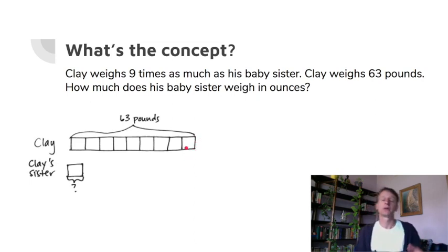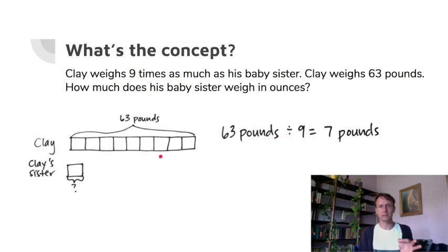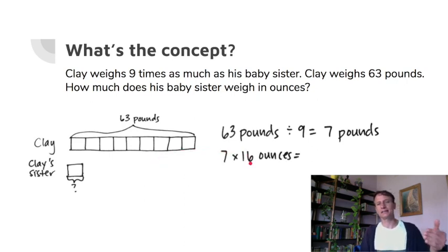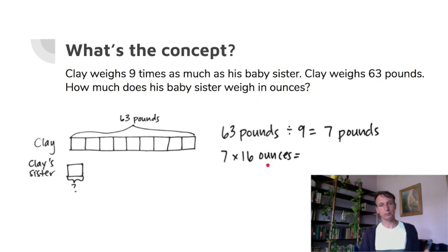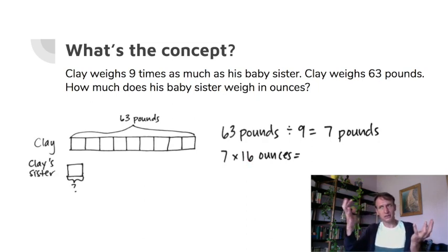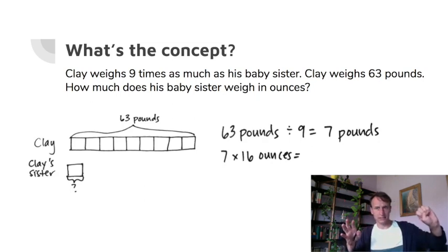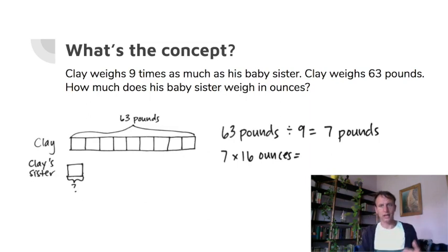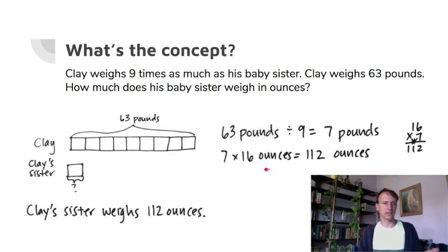Clay is nine times as much, so 63 divided by nine is seven. Baby sister weighs seven pounds — that's a reasonable infant weight. Now multiply by 16 ounces per pound. Seven times ten is 70; seven times six is 42. Decompose 30 from the 42 to reach 100, leaving 12 — so 112 ounces total. Statement: Clay's baby sister weighs 112 ounces.